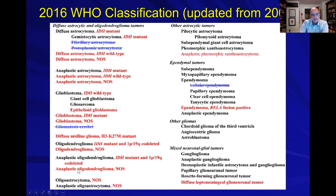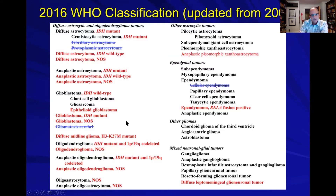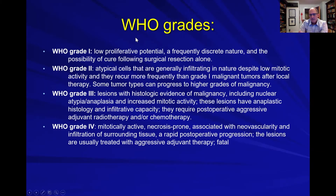Oligodendrogliomas can be defined by IDH mutations and 1p19q chromosomal deletions, and of course there are anaplastic and mixed versions of those. Moving to the right are more astrocytic glioma tumors like pilocytic astrocytomas, subependymal giant cell astrocytomas, and pleomorphic xanthoastrocytomas. Ependymal tumors are also on this list. Other gliomas include chordoid gliomas, and there's a list of mixed neuronal and glial tumors. The bulk of gliomas are on the left, and that's what we'll focus on for this lecture.